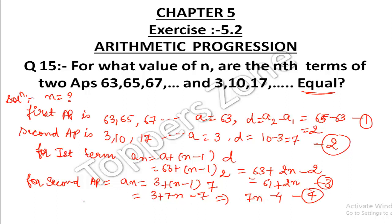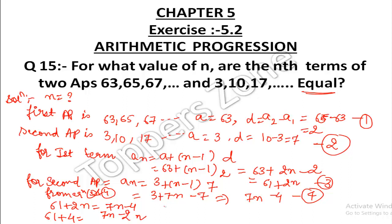Now we set the two nth terms equal: 61 + 2n = 7n − 4. Transposing, 61 + 4 = 7n − 2n, so 65 = 5n. Therefore n = 65 ÷ 5, and the answer is n = 13.